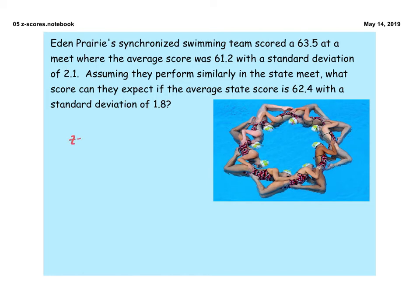So z will be the score that they had minus the average divided by the standard deviation. And so that gives us 1.19. It's very common for you to round your z-score to two decimal places. So 1.19 is our z-score. So what that means is they're just over one standard deviation from the average.